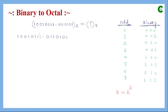For the fractional part, we start from the MSB and move towards the LSB. In the integer part, if the leftmost group has fewer than three bits, we add leading zeros on the left side — since adding zeros to the left of an integer does not change its value. We can then complete that group of three bits.